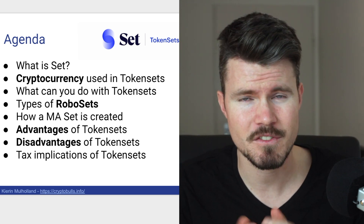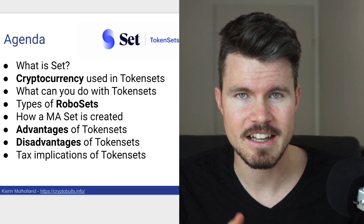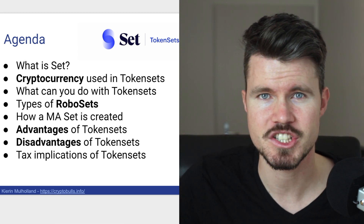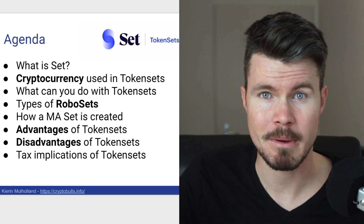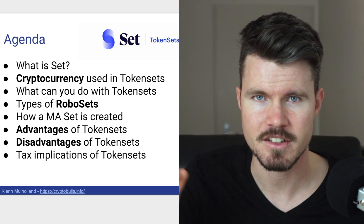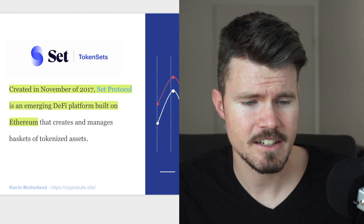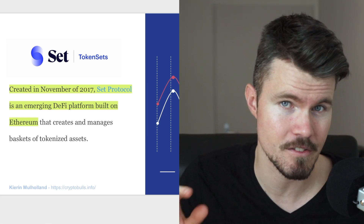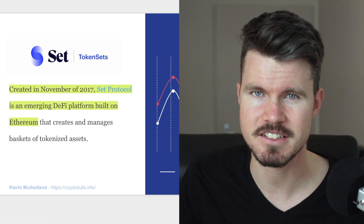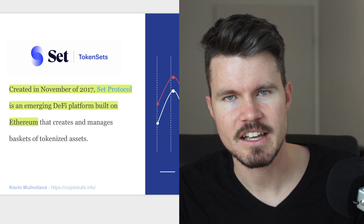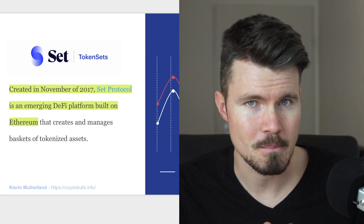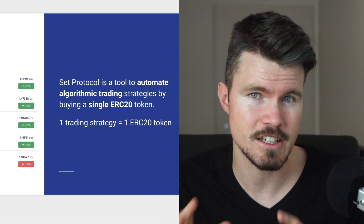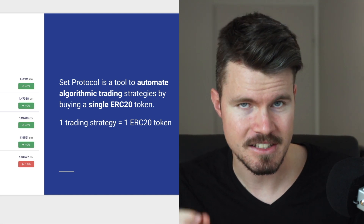In my last video I talked a lot about decentralized finance, and in this video I want to bring to you a very exciting platform that will help you enhance your portfolio and get a better return on investment in the long term by leveraging different trading strategies that work behind the scenes — you do not have to do anything apart from buying the single ERC20 tokens at the beginning. Set was created in November 2017 as a Set Protocol and it's an emerging decentralized finance platform based on Ethereum. The Set Protocol allows you to buy different baskets of tokens that perform a different function. Set Protocol is a tool to automate algorithmic trading strategies by buying a single ERC20 token.